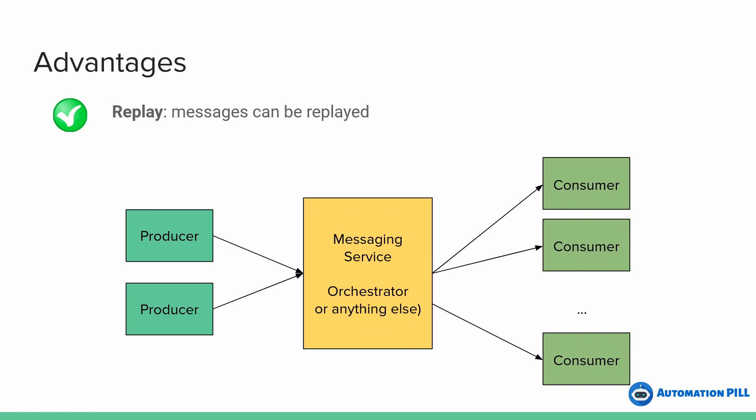Another advantage is replaying messages. As long as you store these messages in order, you can replay bugs and behaviors — that's a huge advantage. Replaying and reproducing scenarios is actually one of the most difficult parts in RPA, because RPA is on top of the entire system and you don't know where a glitch can appear. But replaying can help you reproduce the scenarios you have in production.